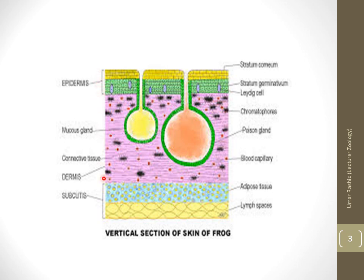From outer to innermost layer: the outer layer is the epidermis, consisting of stratum corneum and stratum germinativum. Beneath the epidermis lies the dermis, within which chromatophores are located — they are responsible for skin coloration. Amphibian chromatophores include xanthophores, iridophores and melanophores as discussed. Below the dermal layer is adipose tissue, and the innermost layer contains lymph spaces.